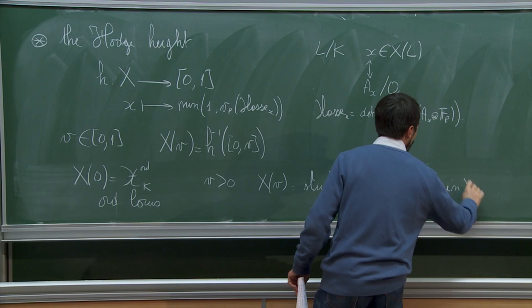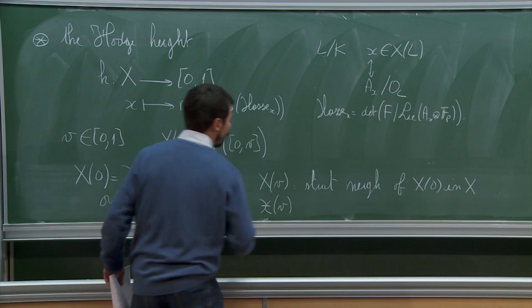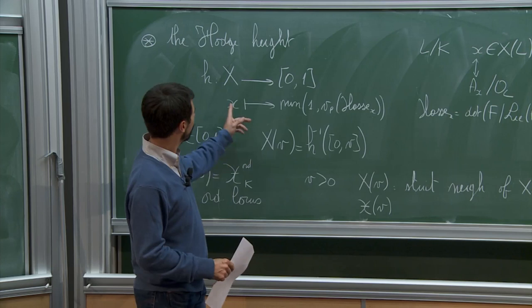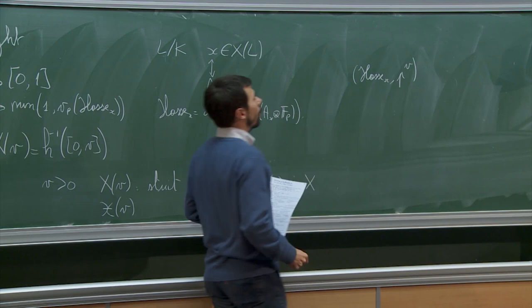We will use a normal formal model for X(v), denoted curly X(v), which is obtained by considering the p-adic completion of the normalization of the maximal open of the blowup of X along the ideal generated by the Hasse invariant.